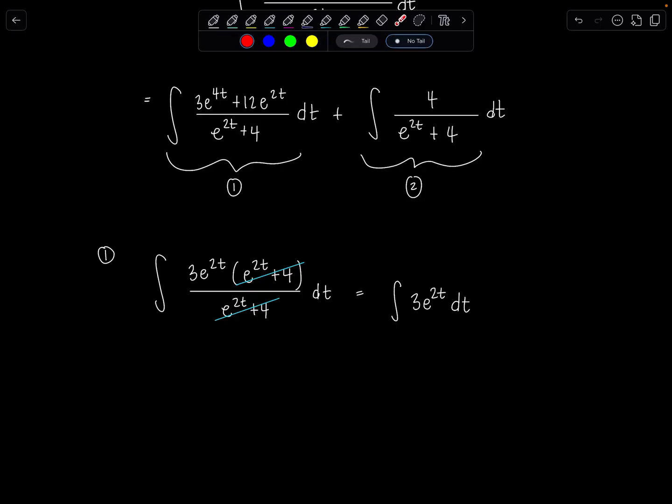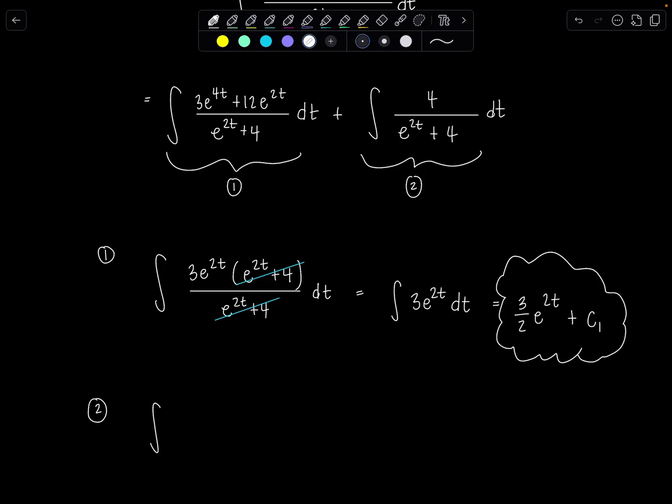So antiderivative is just going to be 3, keep that constant along for the ride, e to the 2t and then divide by 2. We don't need to use u-sub at this point, hopefully you've done enough of these, you see the pattern. So this will be 3 halves, e to the 2t, and then I'm going to say plus c1, because I want to save my plus c with no subscript for the very grand finale final answer. Okay, that first integral was hardly any work, so maybe the second one is going to be more involved. Otherwise, this would be a boring video.